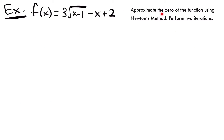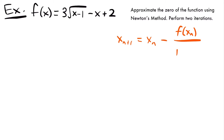For our next example, we want to approximate the zero of the function f of x equals 3 times the square root of x minus 1 minus x plus 2, using Newton's method, and we want to perform two iterations. Once again, Newton's method gives us x sub n plus 1 equals x sub n minus the function evaluated at x sub n divided by the derivative evaluated at x sub n. We'll need the derivative, so let's find that first.